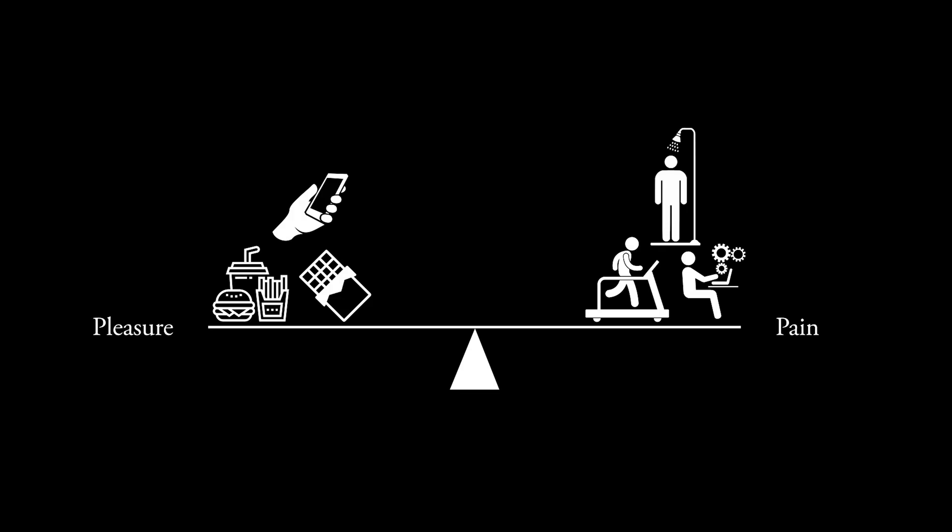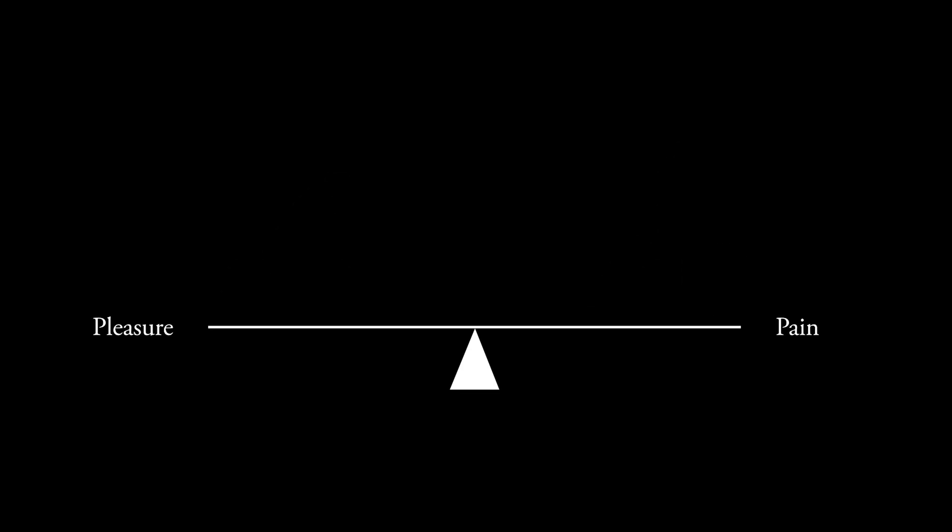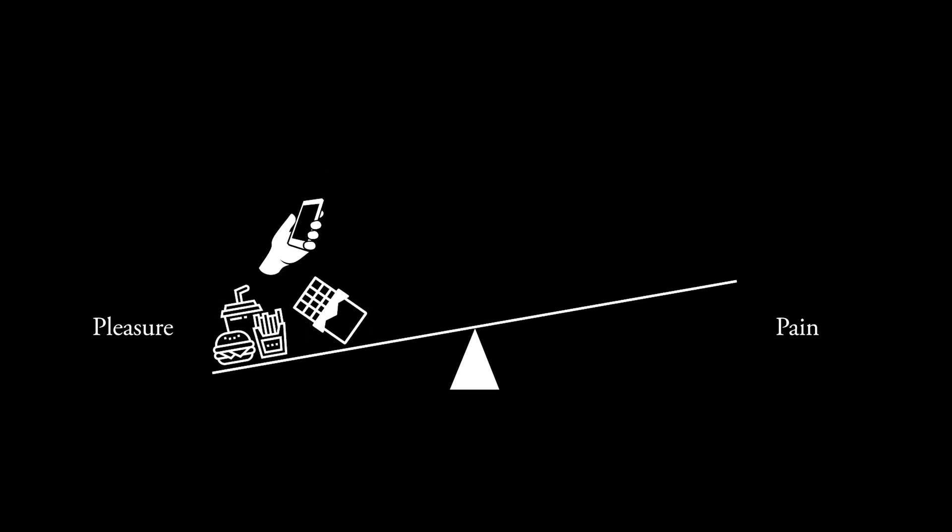When you indulge in something pleasurable, dopamine is released in your reward pathway, tipping the scale toward the pleasure side. But here's the catch. Our brain wants the scale to be balanced, in other words, at equilibrium or homeostasis. So in order to do that, the brain kicks in powerful self-regulating mechanisms to bring the scale back to balance.